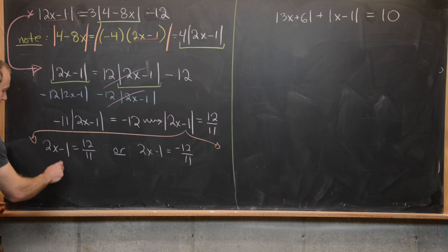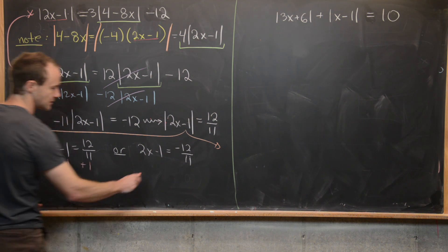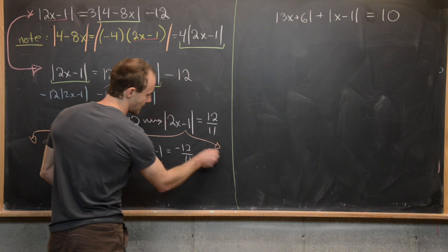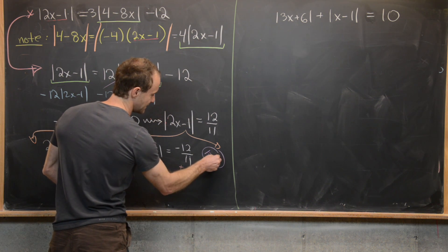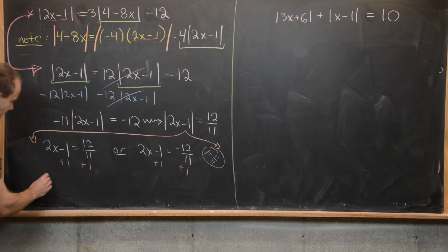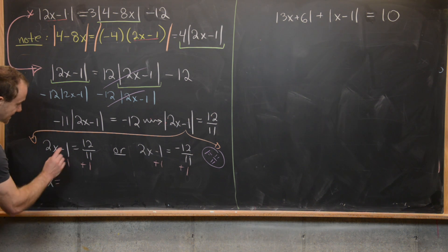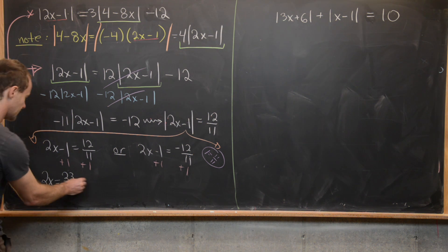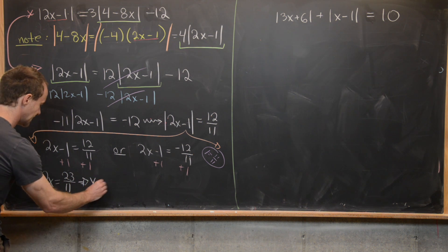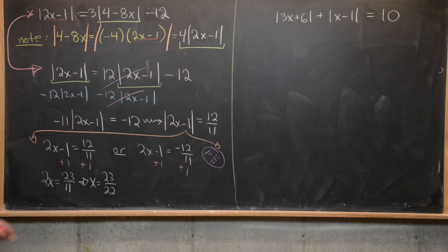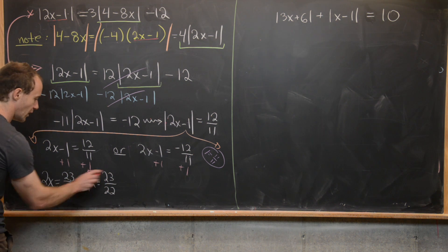Next we'll add 1 to both sides. We can think of 1 as 11 over 11 to have a common denominator, so we're adding 11 over 11. That gives us 2x equals 23 over 11, which tells us that x equals 23 over 22 after dividing by 2. So that would be one of our solutions.